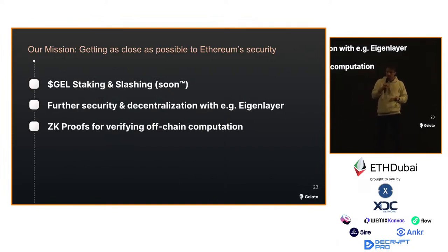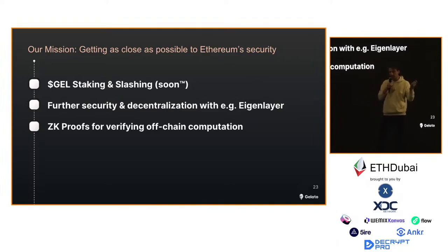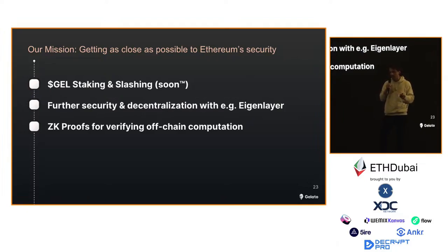Our mission is to get as close as possible to Ethereum security. We will launch GEL staking and slashing soon, most likely next month. We have a bunch of node operators in the network — it's still permissioned at this stage but eventually it will be permissionless and you can join by staking the minimum stake. We're also talking to the guys from EigenLayer to get more restaking and more stake on Gelato network — more skin in the game for node operators. Last but not least, we're researching zero-knowledge proofs for our Web3 functions so we can have verified compute outputs, making it easy to agree on data generated off-chain and verified on-chain.